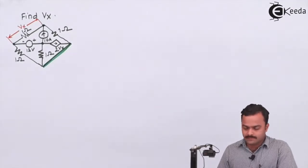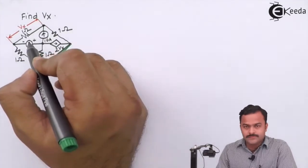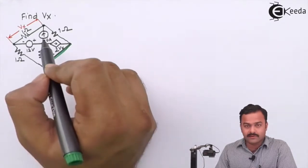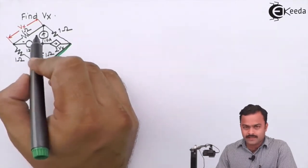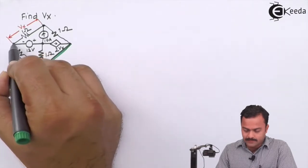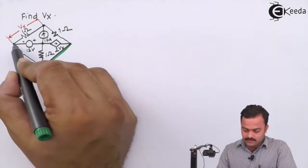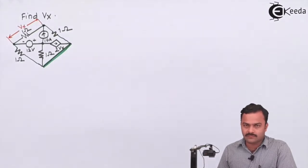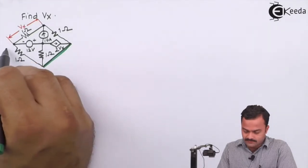So in all there are four nodes. Out of the four nodes, one node we have to take as a reference. Here we need to do a smart selection for a reference node. If you observe carefully, between these two nodes there is a voltage source given with no resistance in this particular branch, so it is always better to take the negative terminal of this voltage source as the reference. This will serve a purpose where I can get one equation directly without application of KCL to that particular node.